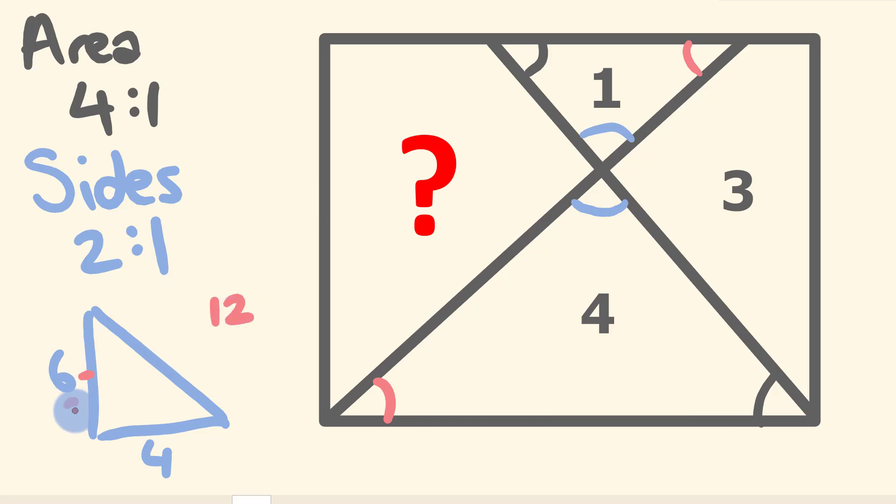Now if I was to halve our side lengths, we'd have 3 and 2, we could work out the area of our little triangle here. 3 times 2 is 6, divided by 2 is equal to 3. You can see that our areas have a 4 to 1 ratio, but our side lengths have a 2 to 1 ratio. So we can use this now to solve our problem.